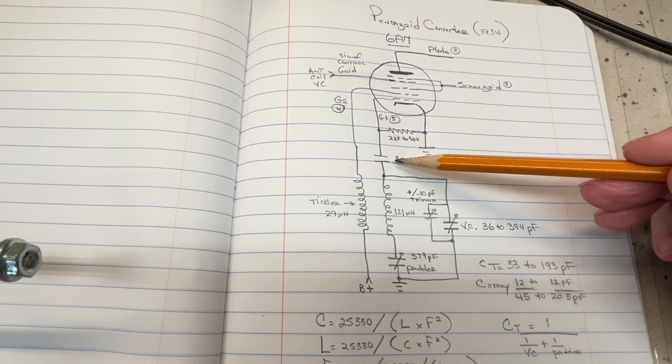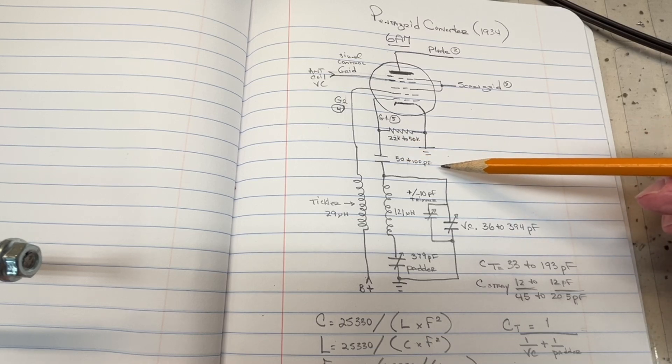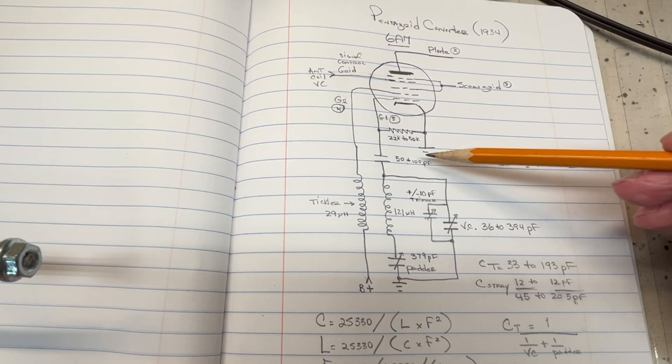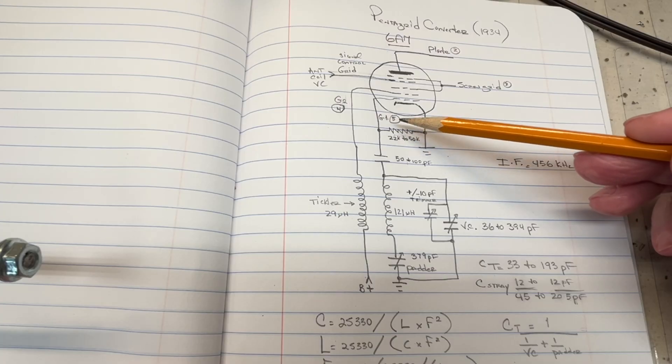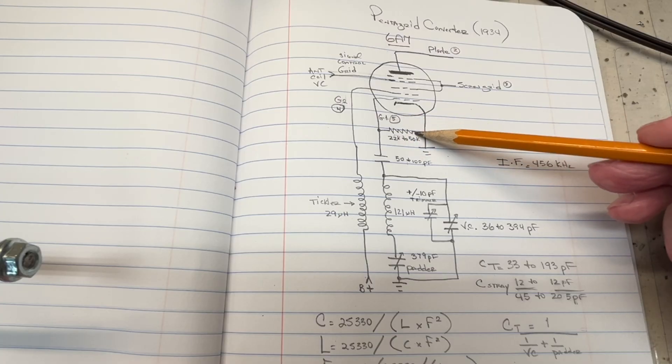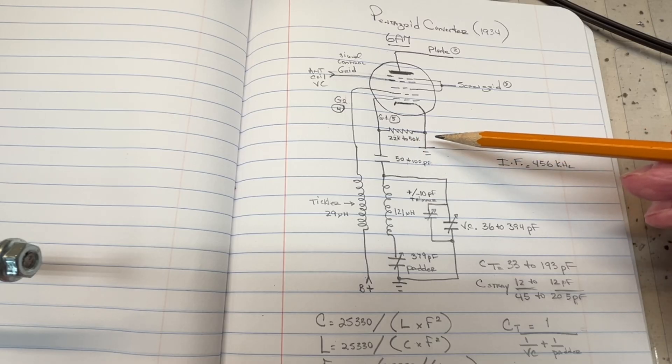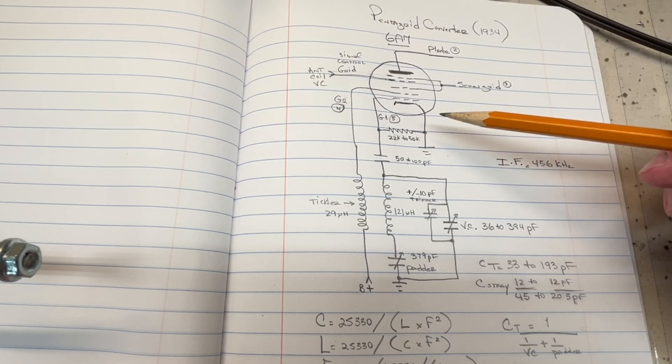called out around 29 microhenries. The coupling cap here, typically 50 to 100 pF. This receiver, 100 pF, and most common for the grid number one. The bias there, a 22k resistor, a 22k resistor is more common. This receiver uses a 50k.